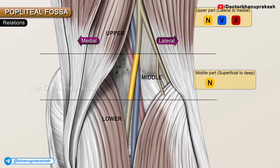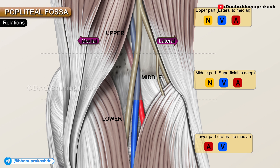In the lower part of the fossa, from lateral to medial, the order of arrangement is artery, vein, and nerve. This concludes the relationship of the neurovascular structures in the popliteal fossa, completing all the important anatomical points about the popliteal fossa.